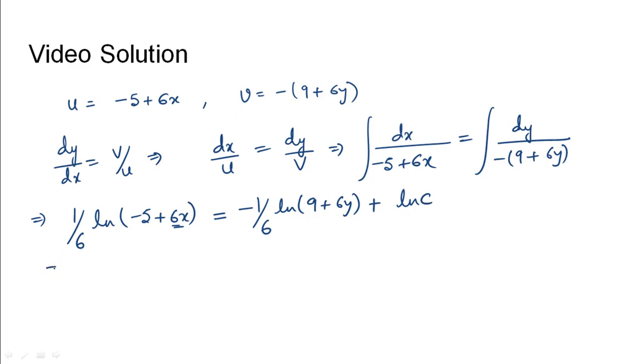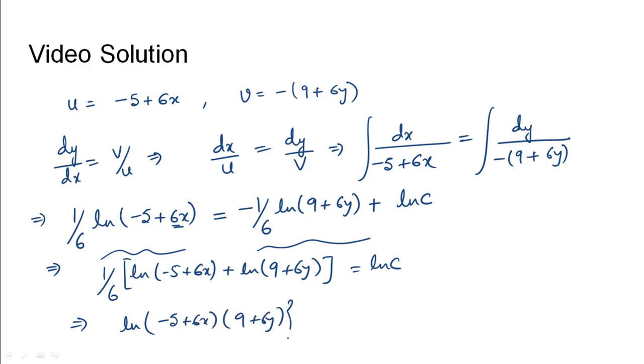Taking both the variable terms on one side, we would get 1 by 6 into ln of minus 5 plus 6x plus ln of 9 plus 6y equals ln of c. This can be further written as ln of minus 5 plus 6x into 9 plus 6y, that can be taken into one term, equals ln of c raised to power 6.